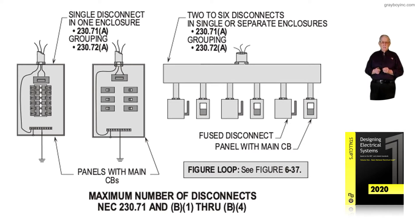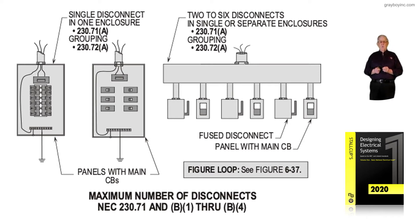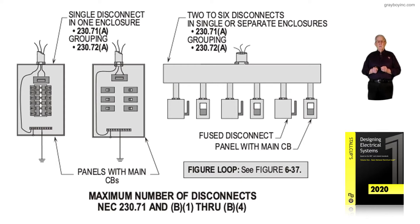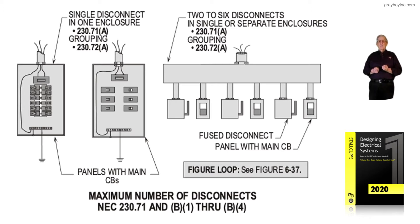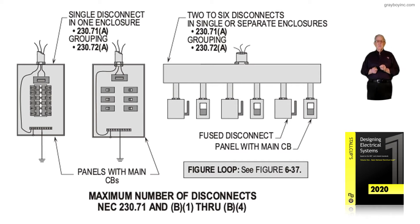We will be talking about 230.71, B1 through B4, in more depth later. Notice the NEC note says if you want to get a good feeling for the 2 to 6 disconnecting means, see figure 6-37, which is the next illustration.